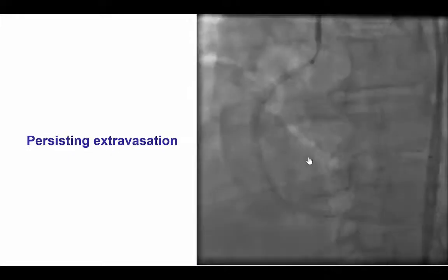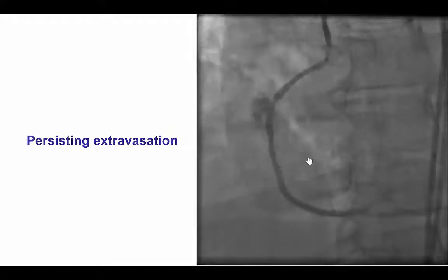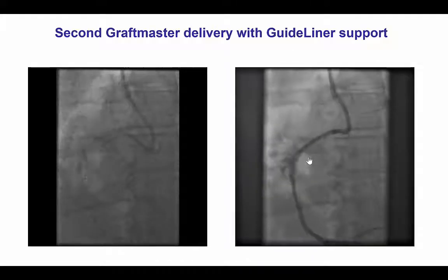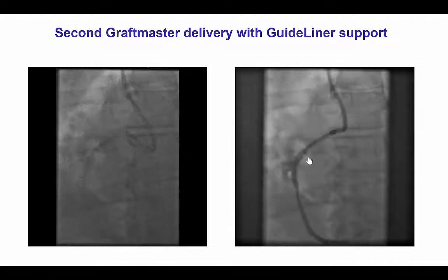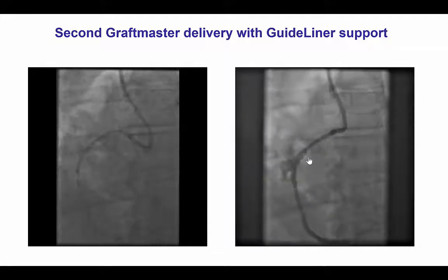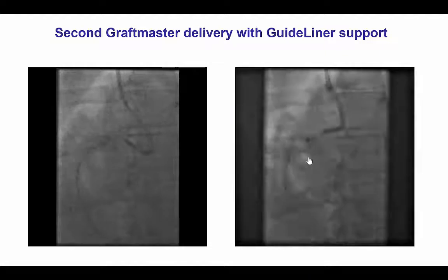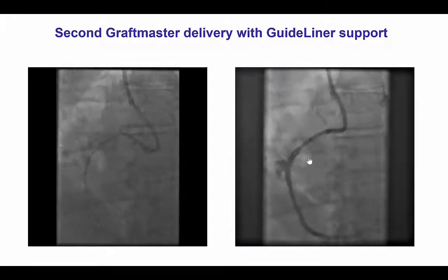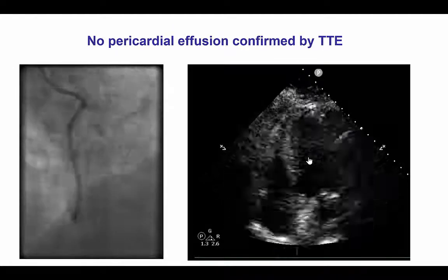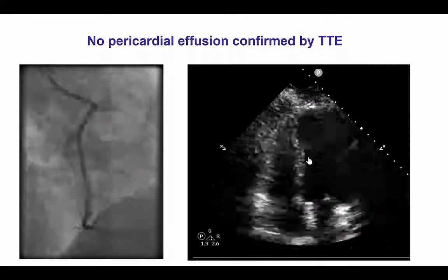Unfortunately, despite placing the covered stent, there continued to be some extravasation in the mid-right coronary artery, and that is why we decided to place a second covered stent, which once again was done using the guideliner. It is interesting that we had an externalized guide wire, but still we did not have the possibility to advance the covered stents, showing how difficult it can be to deliver those bulky devices. Eventually, we were able to deliver the second covered stent, which was deployed.